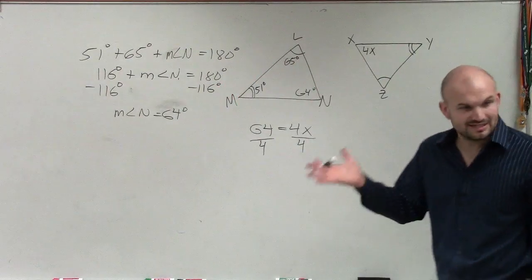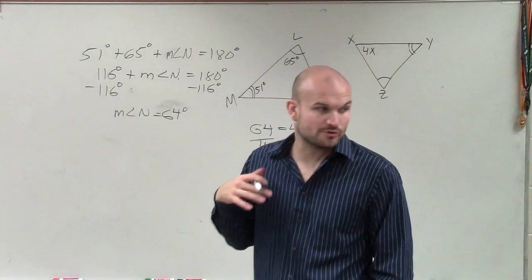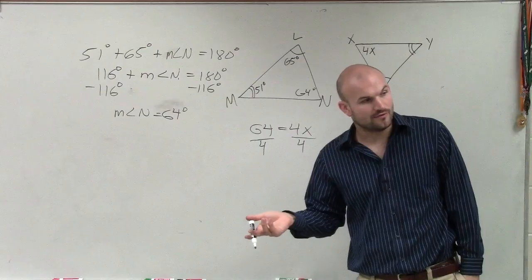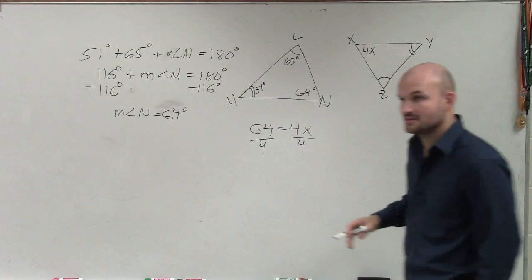We know that 4 goes into 40 ten times, so 64 minus 40 leaves you a remainder of 24. And 4 goes into 24 six times, so 10 plus 6 is 16.